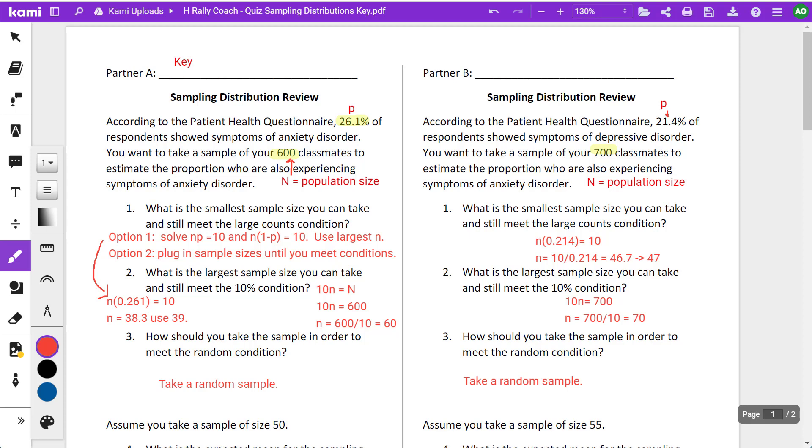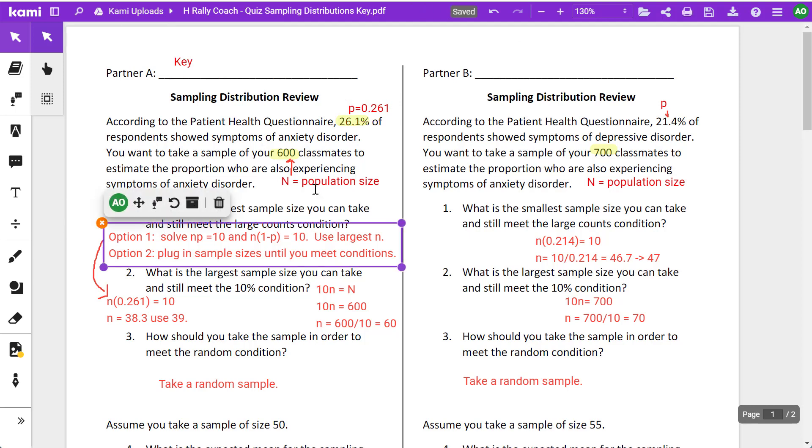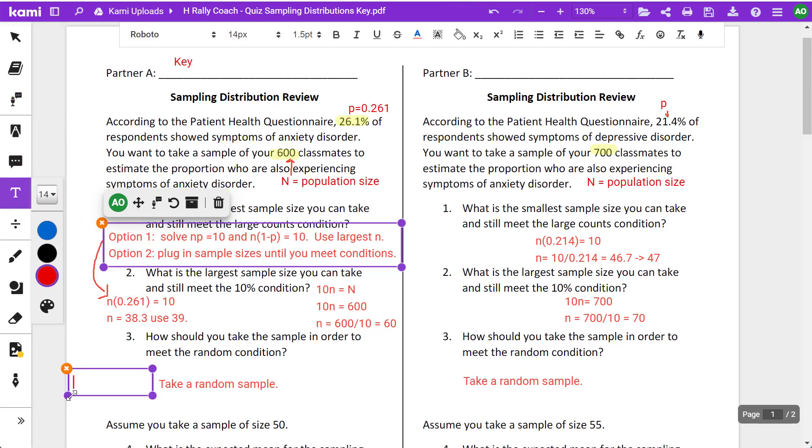According to the patient health questionnaire, 26.1%, or basically that's your proportion. In fact, let me go ahead and add that in. The proportion, always use a decimal, 0.261. Of respondents shows symptoms of anxiety disorder. You want to take a sample of your 600 classmates to estimate the proportion. N is your population size, N is 600.